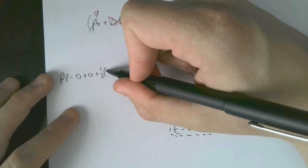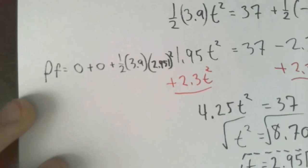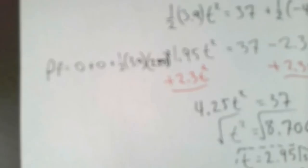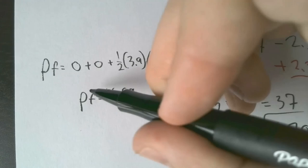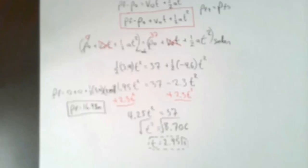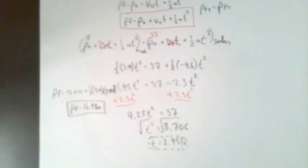Here we go: PF equals 0 plus 0 plus one half times 3.9 times 2.951 squared. Super tough problem. Honestly, I think the physics is not really that tough - this is all physics, and the rest is just math, it's all algebra. Once again, I recommend you at least start here and see if you can do the algebra again. Probably Monday night would be a good idea, and then you'll be solid for the test.